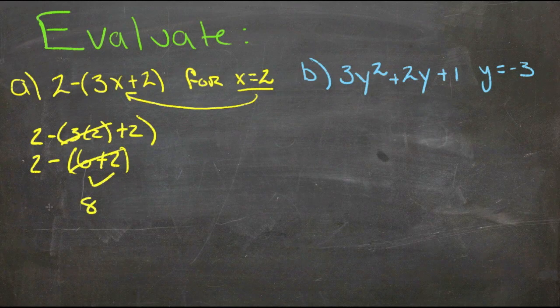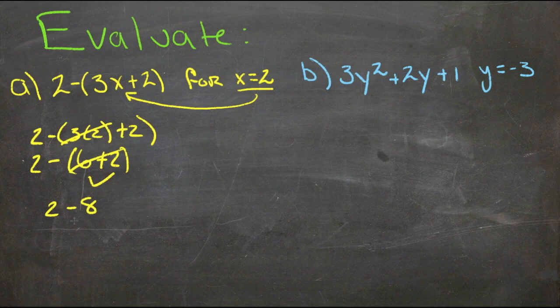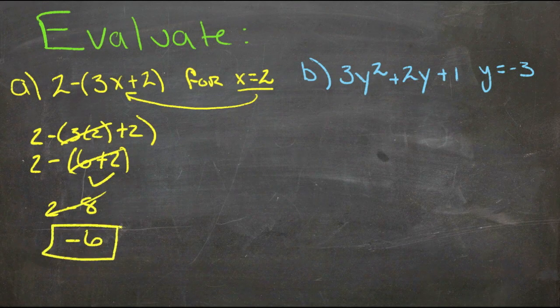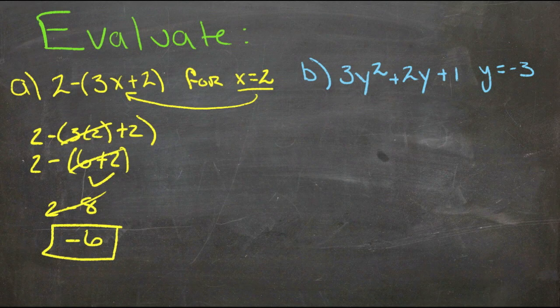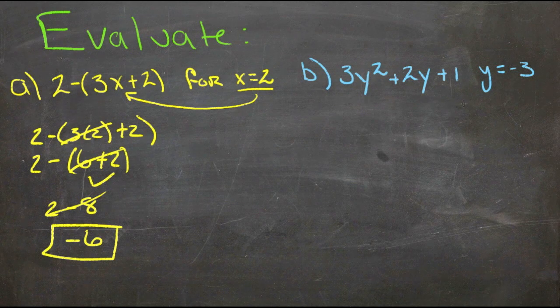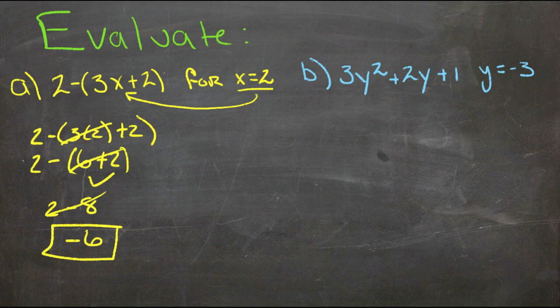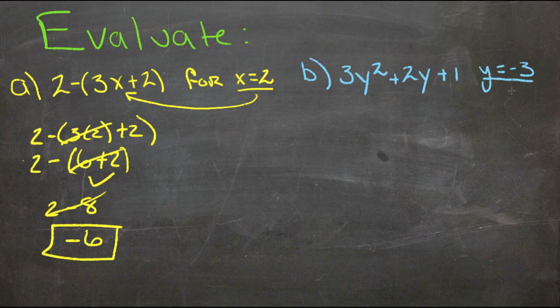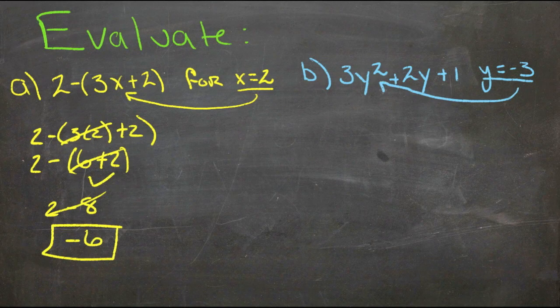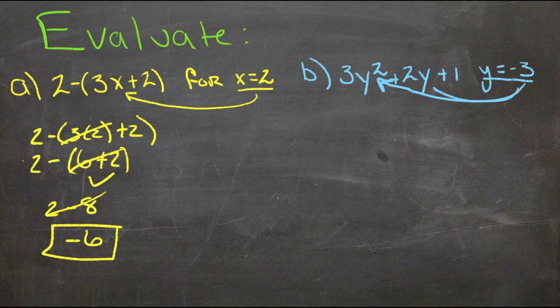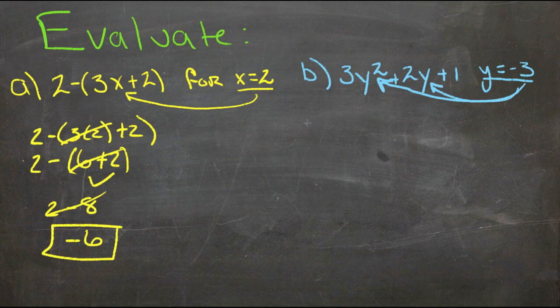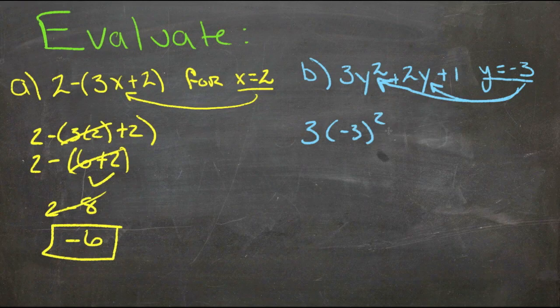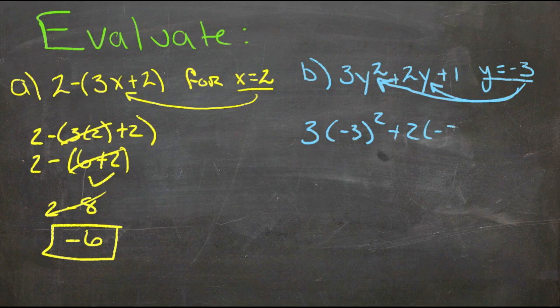And then the other problem here in B, we have 3y squared plus 2y plus 1, and we're solving it or evaluating it for y equals negative 3. So put that negative 3 in here and in here, that'll give us 3 times negative 3 squared plus 2 times negative 3.